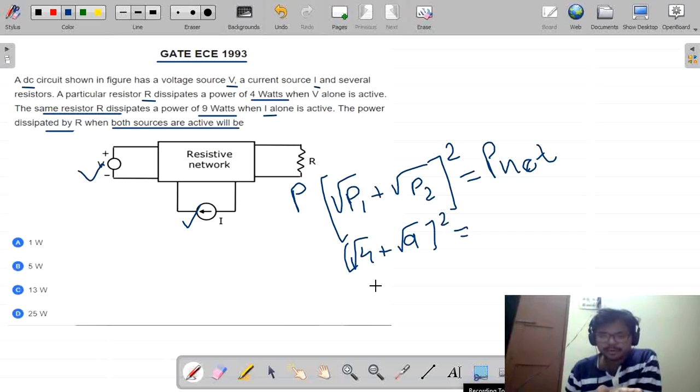Square root of 4, it means 2 plus square root of 9, it means 3. Now 2 plus 3, 5 whole square is equal to 25 watts.